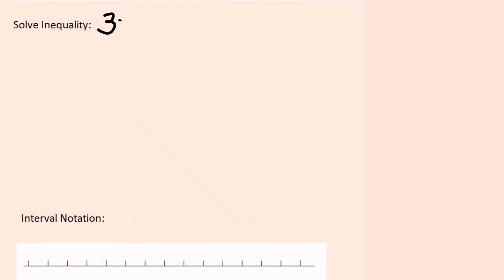Now we're going to solve an inequality. 3x plus 6 is strictly greater than 30.